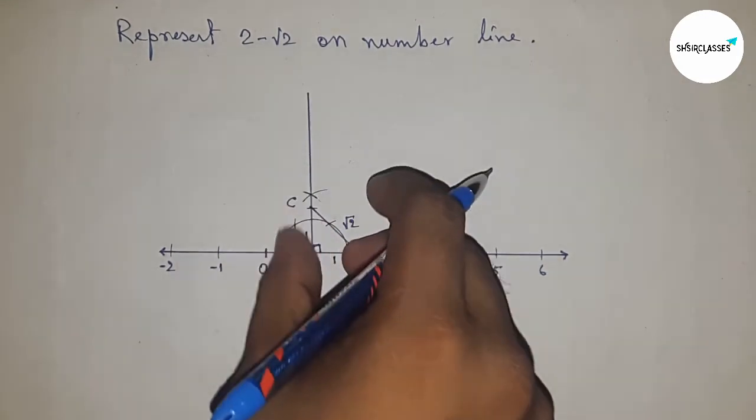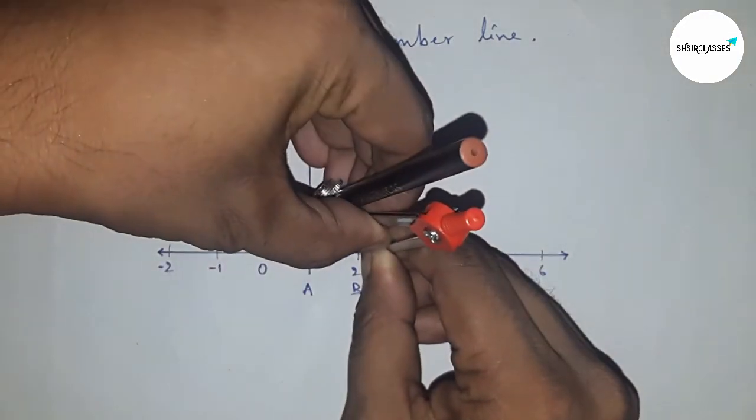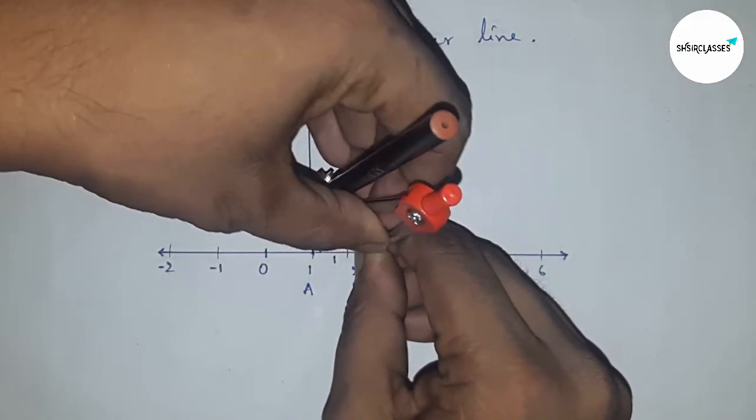Obviously, this is root 2. Next, drawing an arc, so taking the length of the hypotenuse with the compass.